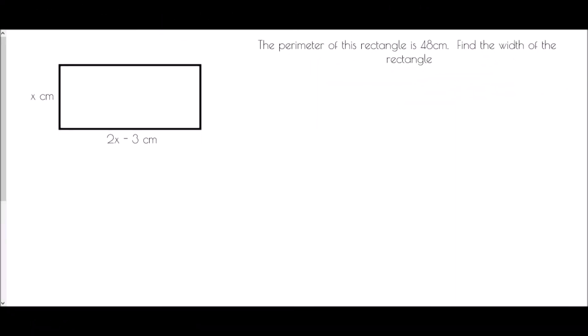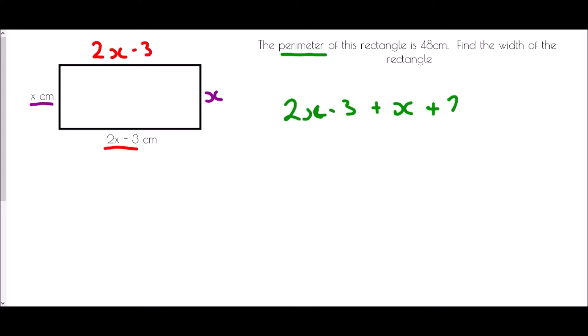Next we have a rectangle and the perimeter is 48 centimeters. We need to find the width. Because it's a rectangle, the height of x centimeters is the same on the other side. The width is 2x − 3, which is also the same at the top. Perimeter means all sides added together: (2x − 3) + x + (2x − 3) + x.